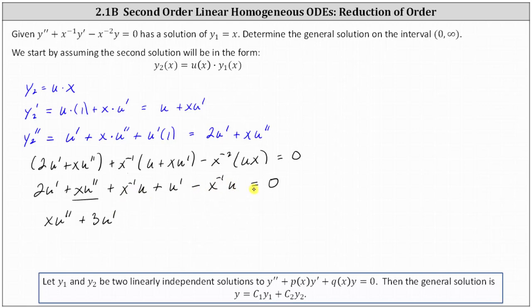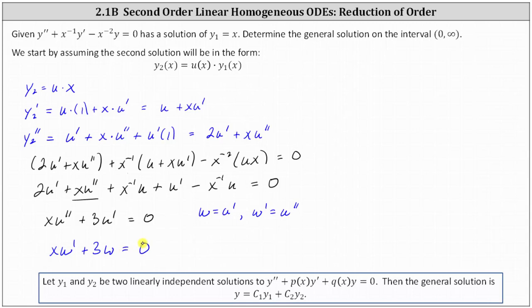The differential equation simplifies to x·u double prime plus three·u prime equals zero. Because there is no u term in the differential equation, we perform a substitution to reduce the order. Let w equal u prime, and therefore w prime equals u double prime. Performing the substitution, we now have x·w prime plus three·w equals zero — a first order linear homogeneous differential equation, which we can solve using separation of variables or an integrating factor. I'll use separation of variables.